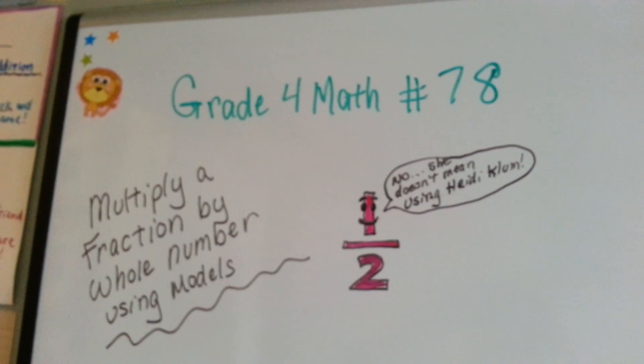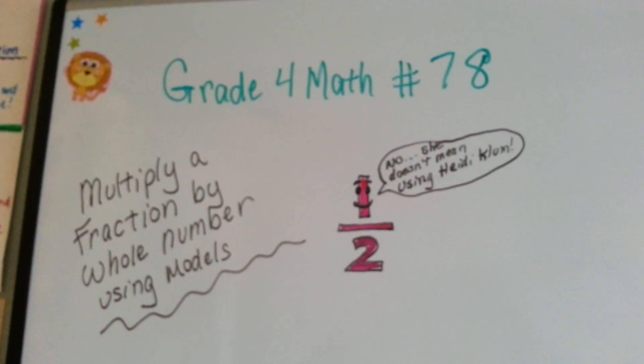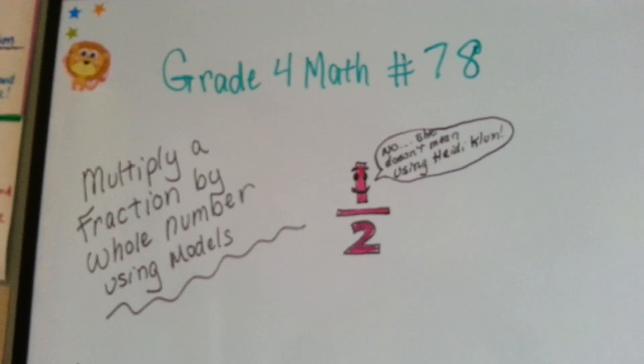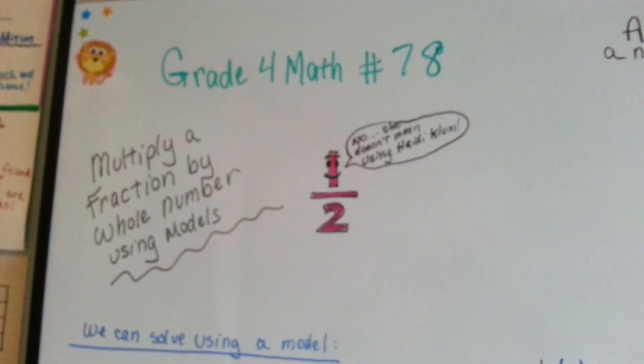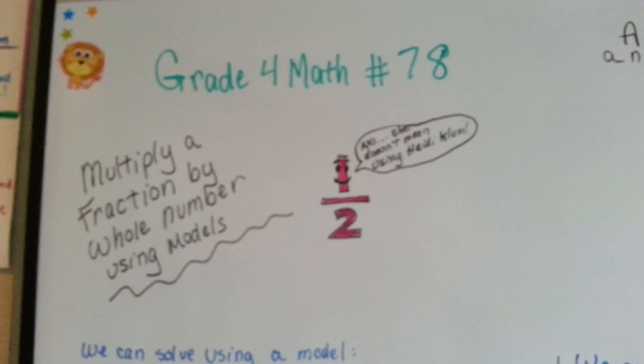Grade 4 math, number 78: Multiply a fraction by a whole number using models.